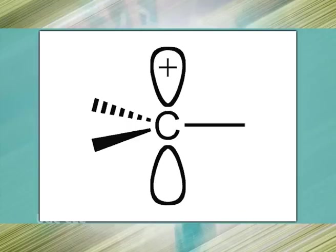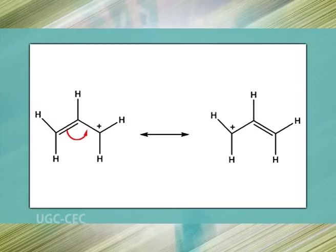A carbocation is a molecule in which a carbon atom bears three bonds and a positive charge. Carbocations are generally unstable because they do not have eight electrons to satisfy the octet rule. The first factor in determining carbocation stability is resonance — resonance is a stabilizing feature because it delocalizes the positive charge and creates additional bonding between adjacent atoms.